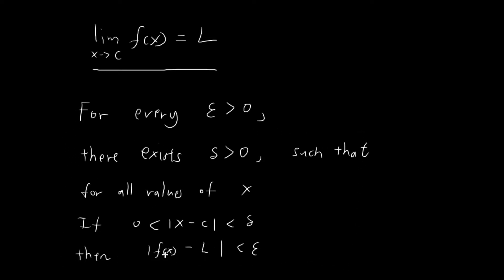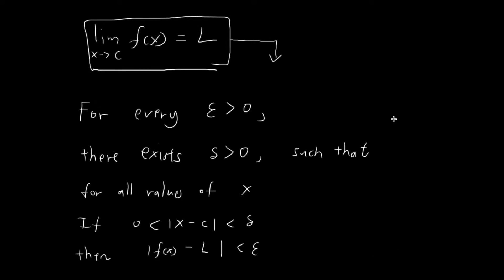You can view the limit statement as a shorthand for this longer epsilon-delta statement. So whenever we say that the limit of f of x as x tends towards c is equal to L, what we're saying is that this epsilon-delta statement is true and satisfied.